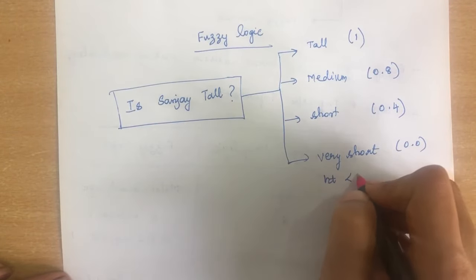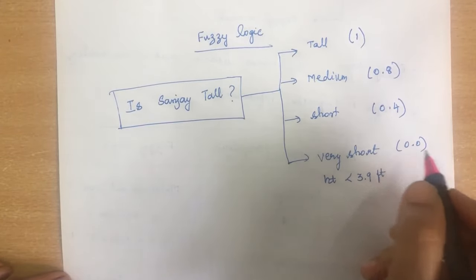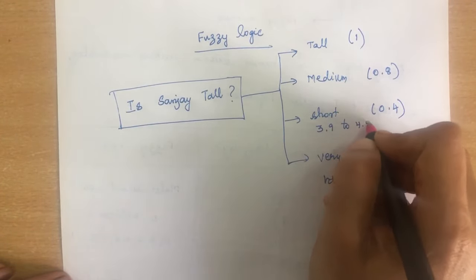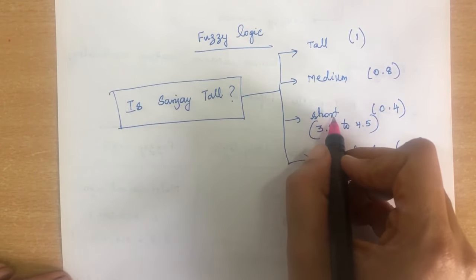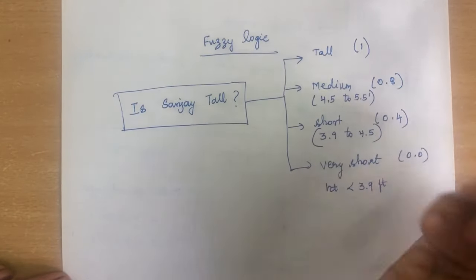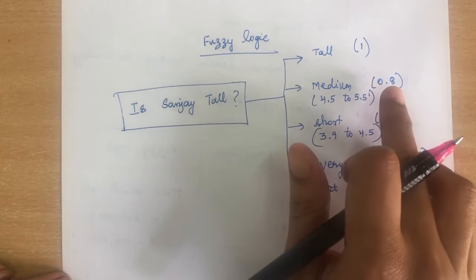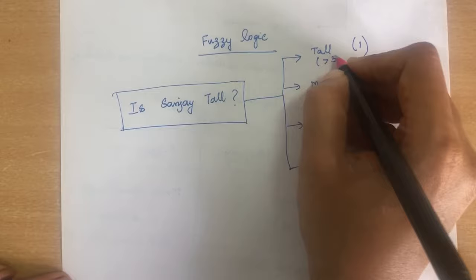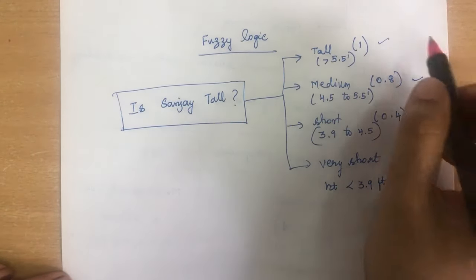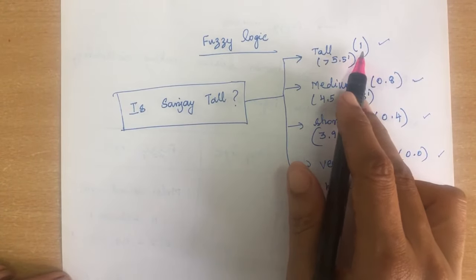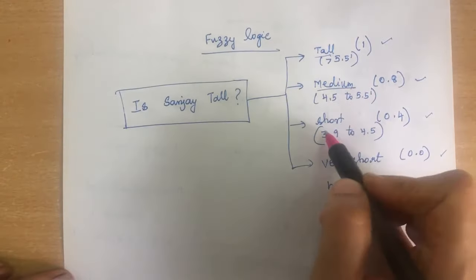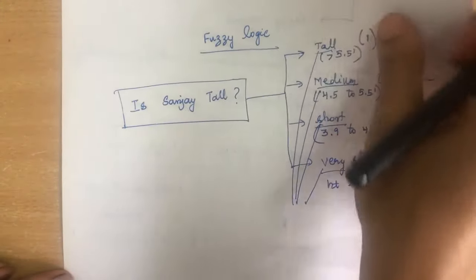If a person's height is less than 3.9 feet, I classify them as very short with value 0.0. From 3.9 to 4.5 feet is classified as short with value 0.4. From 4.5 to 5.5 feet is medium with value 0.8. Above 5.5 feet is classified as tall with value 1. So I have multiple values between 0 and 1 based on these variables. These variables — tall, medium, short, very short — are called linguistic variables in fuzzy logic.